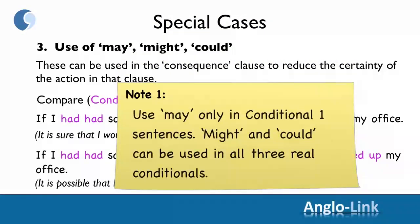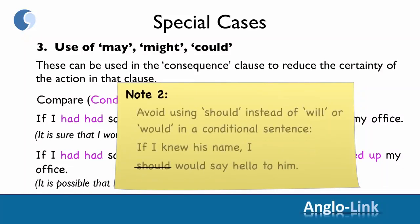There are two things to note here. First, use 'may' only in conditional one sentences. 'Might' and 'could' can be used in all three real conditionals. Second, you should avoid using 'should' instead of 'will' or 'would' in a conditional sentence. For example, don't say: 'If I knew his name, I should say hello to him.' Instead say: 'If I knew his name, I would say hello to him.'